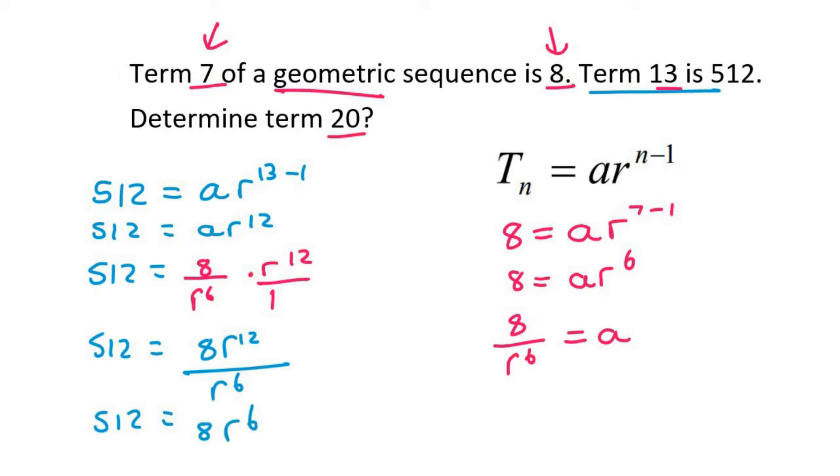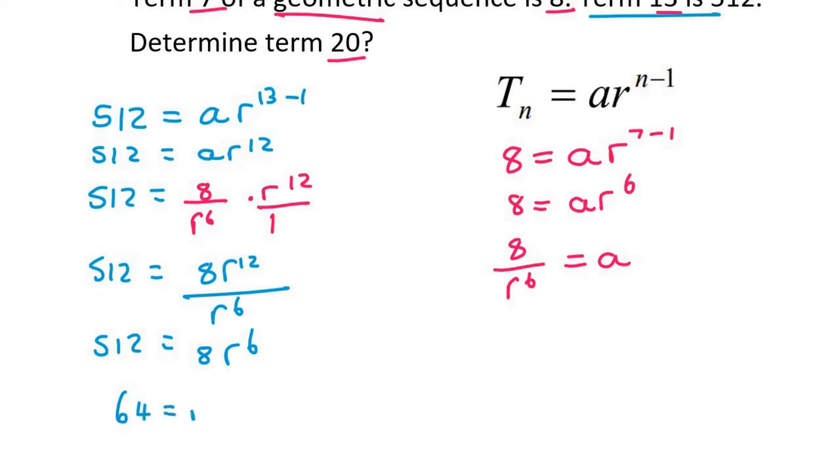Then we can divide by 8, which gives us 64. You then take the 6th root, like this. And so r would eventually equal 2.